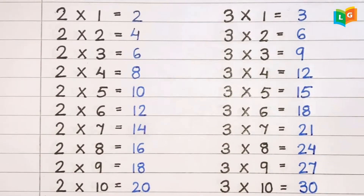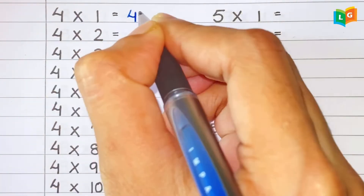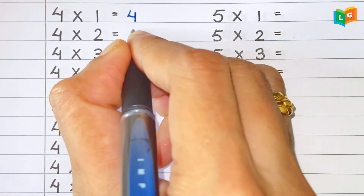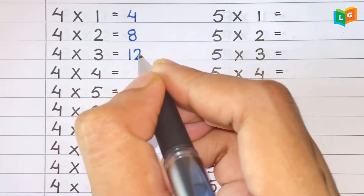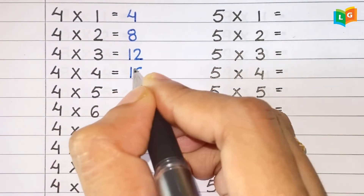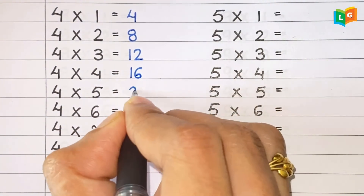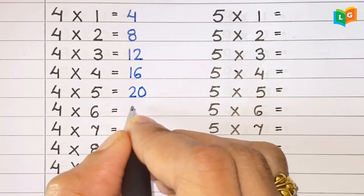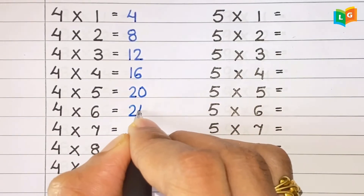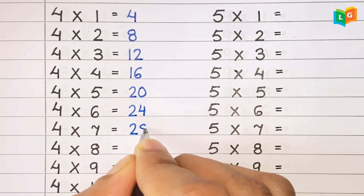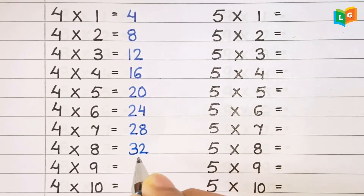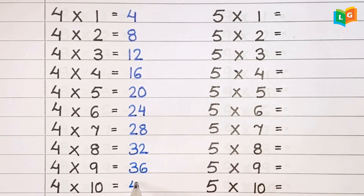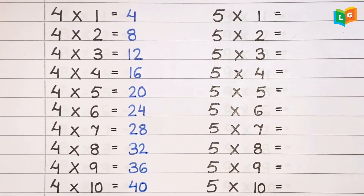Now let's see table of 4. 4 1s are 4, 4 2s are 8, 4 3s are 12, 4 4s are 16, 4 5s are 20, 4 6s are 24, 4 7s are 28, 4 8s are 32, 4 9s are 36, 4 10s are 20.